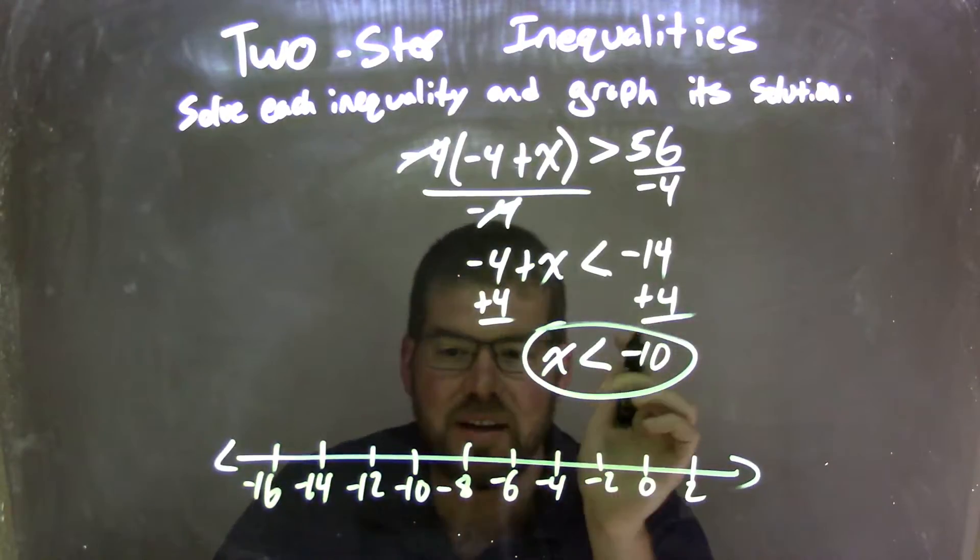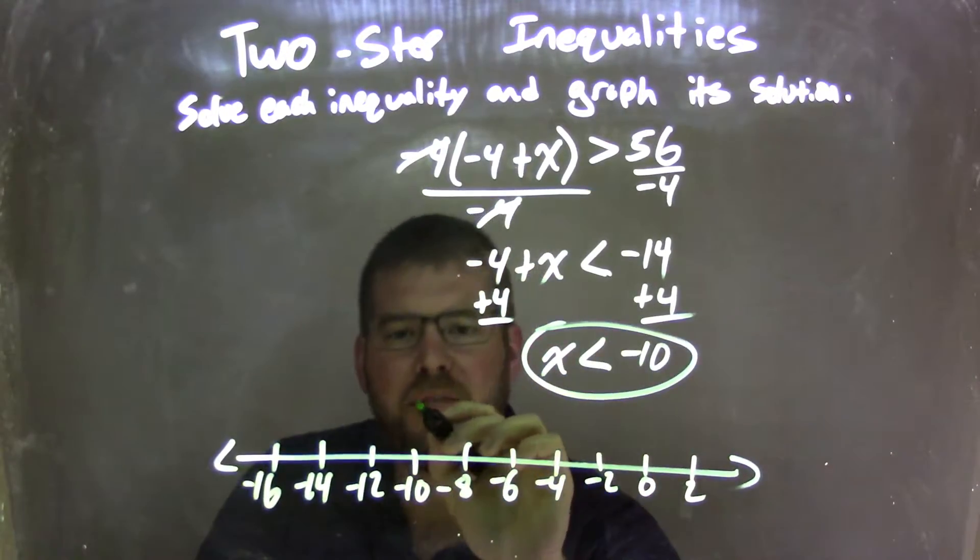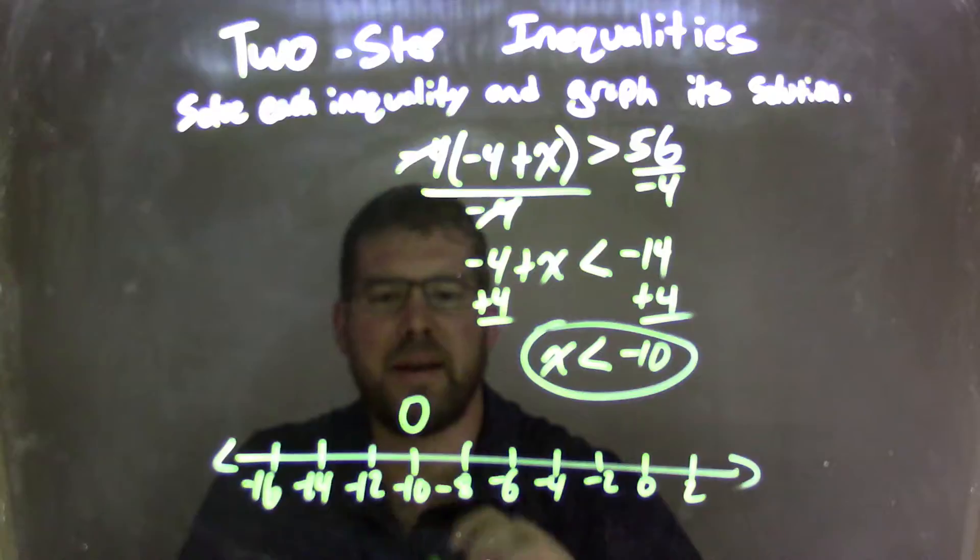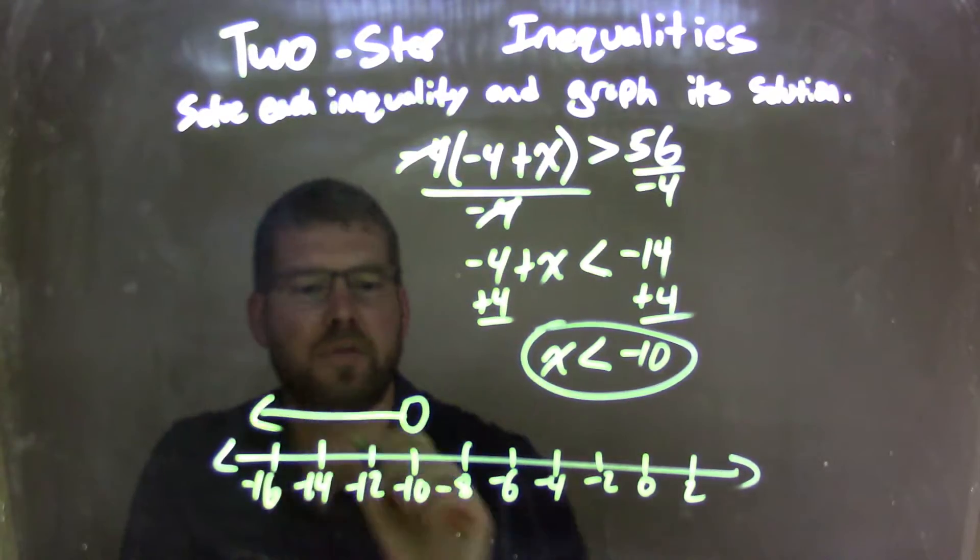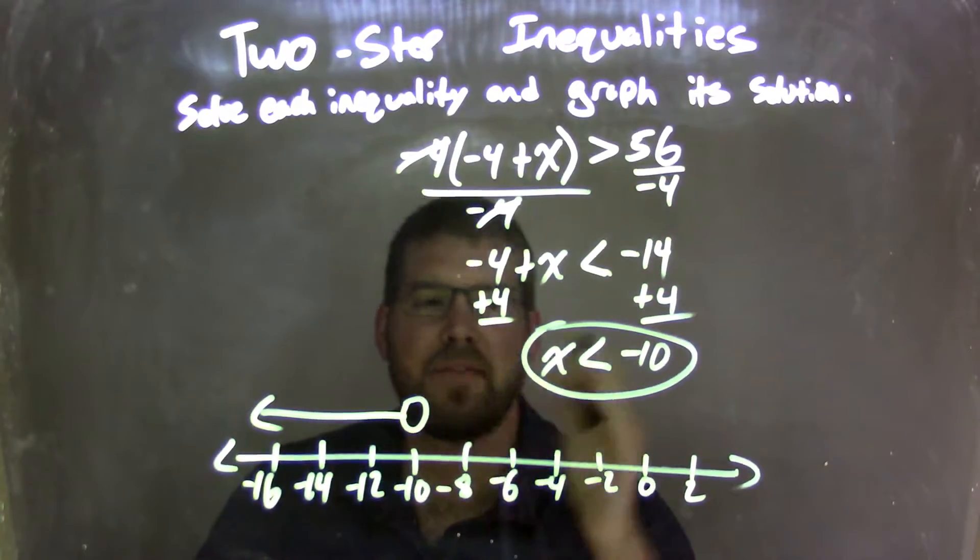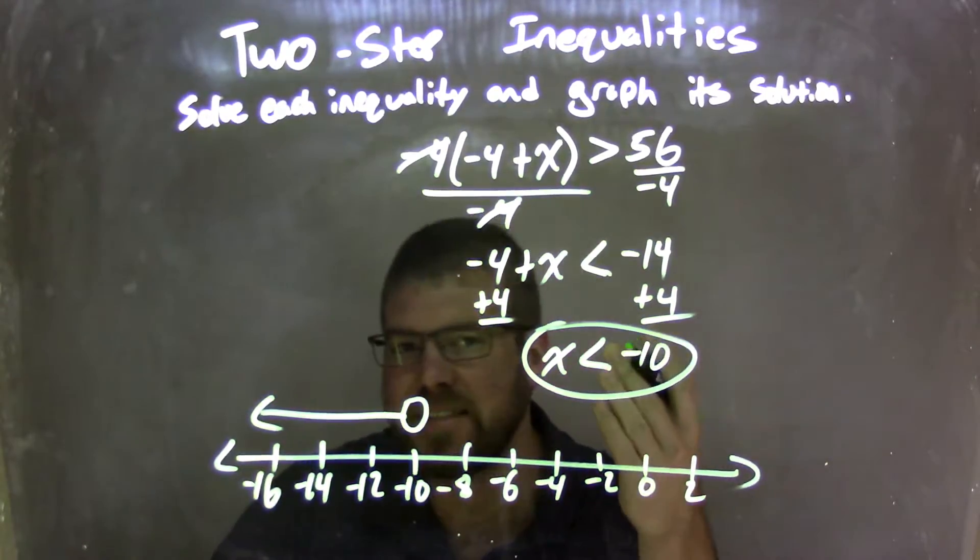Well, since x is just less than negative 10, I have an open circle there at negative 10, and then we need to shade to the left because x is less than all those values. And so now I have a graph that matches my inequality of x is less than negative 10.